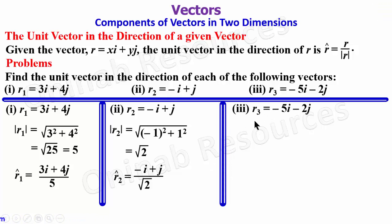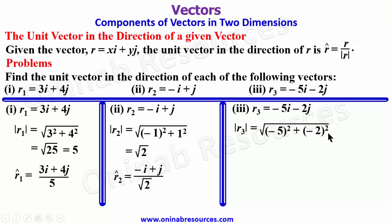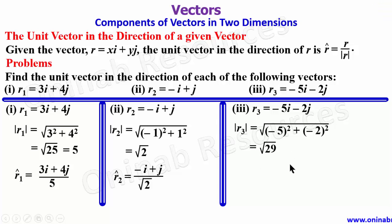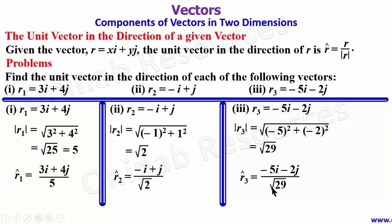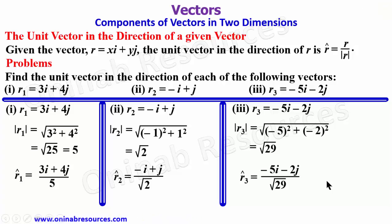For r3, the magnitude is √((-5)² + (-2)²) = √(25 + 4) = √29. The unit vector in the direction of r3 is r̂3 = (-5i - 2j) / √29. That's all for the unit vector in the direction of a given vector.